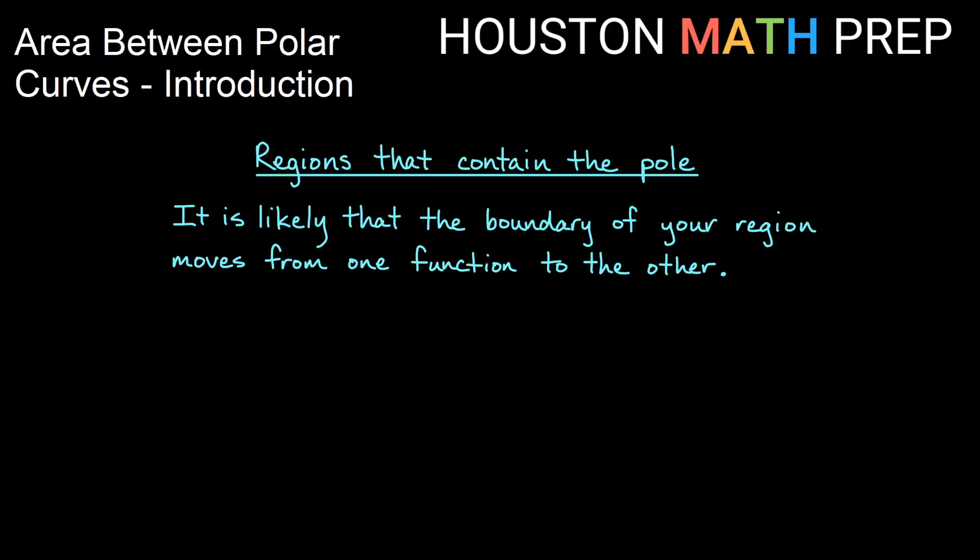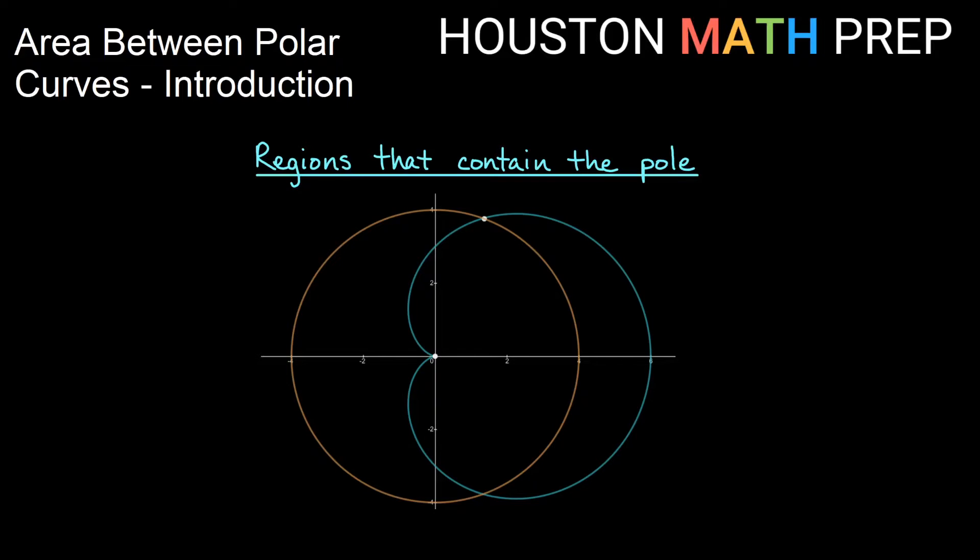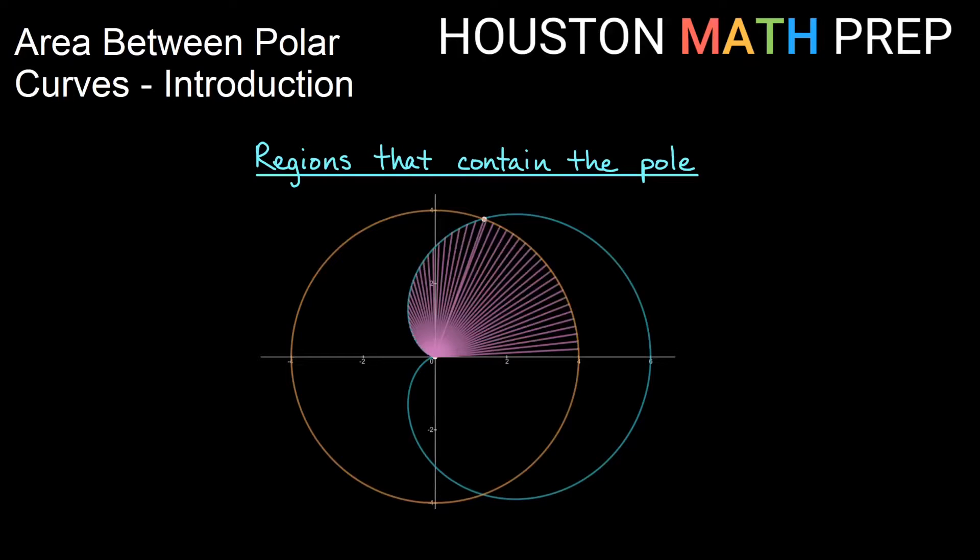For regions that contain the pole, it's very likely that when you are looking at the boundary of your region and you're taking sectors coming out from the origin, that you may have your sectors going to one curve and then changing and going to another curve. When this happens, we'll need to use more than one integral to do this. If you look at this example here, if I want to find the area between the circle and the cardioid that's inside both of them, I'm going to go ahead and just look at the top half of that region and then we could multiply by two. So this is the top half of the region filled with sectors.